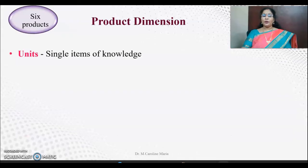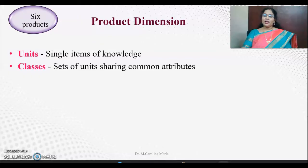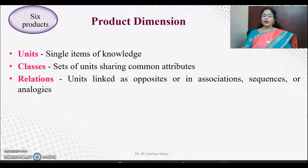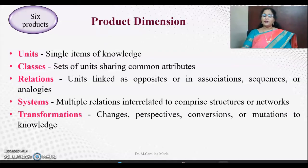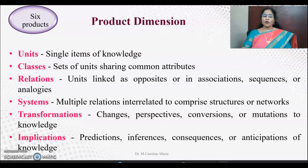The six products are: units — single items of knowledge; classes — sets of units sharing common attributes; relations — units linked as opposites, associations, sequences, and analogies; systems — multiple relations interrelated to form structures or networks; transformations — changes, perspectives, conversions, mutations to knowledge; and implications — predictions, inferences, consequences, and anticipation of knowledge. So all six operations work on five content types and produce these six kinds of products.